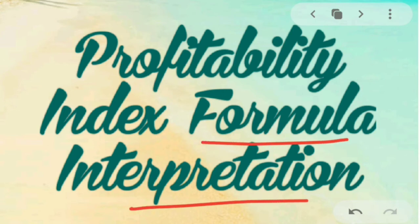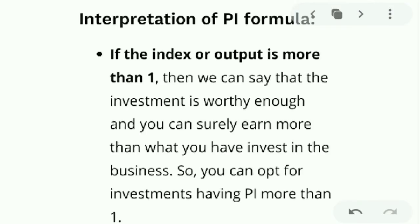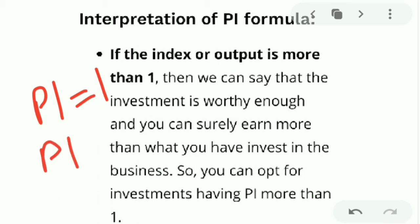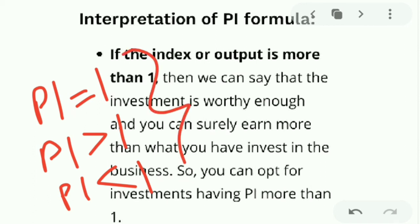Next, we will look at profitability index interpretation — we interpret the formula to determine whether it is profitable or not, and whether you should invest or not, depending on the PI value. The three cases are: PI equal to one, PI greater than one, and PI less than one.